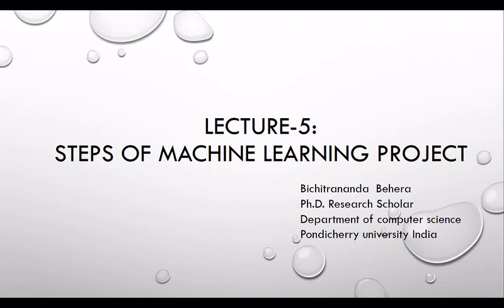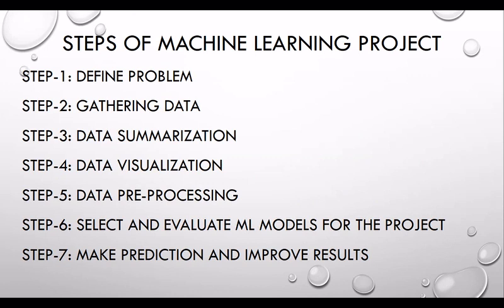Hi, this is Lecture 5 of this video lecture series. Today we are going to discuss the steps of machine learning projects. We will discuss what the steps are - there are basically seven steps involved for doing any kind of machine learning project. It may be a small or big project, but these seven steps are very crucial. If you know them properly, you can do any kind of project.